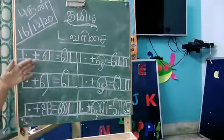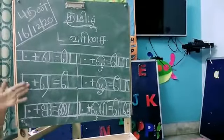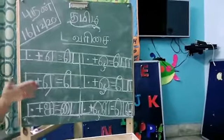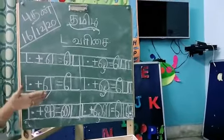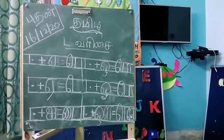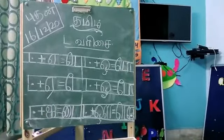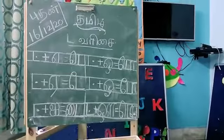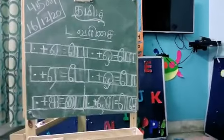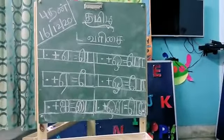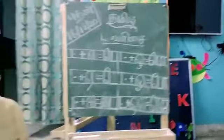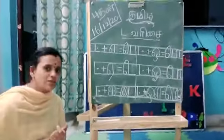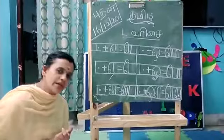Already we finished the six lines written part. So remaining six verses, you have to write in your tummy note. At the same time, you have to do the oral practice also. Okay kids?